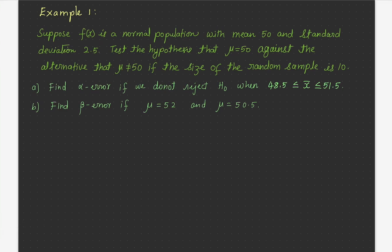Now we understand this in detail with an example. Suppose f(x) is a normal population with mean 50 and standard deviation 2.5. Test the hypothesis that the mean is equal to 50 against the alternative that the mean is not equal to 50. The null hypothesis is mu equal to 50, the alternate hypothesis is mu not equal to 50, the population standard deviation is 2.5, and the sample size is 10. We need to find the alpha error and beta error.